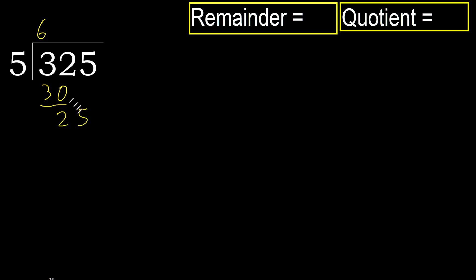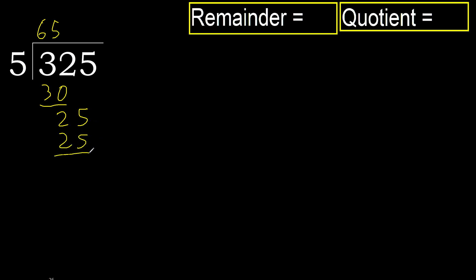Next digit: 25. 5 multiplied by 6 is 30, which is greater. Multiply by 5: 25 is not greater. Subtract: 25 minus 25 is 0.